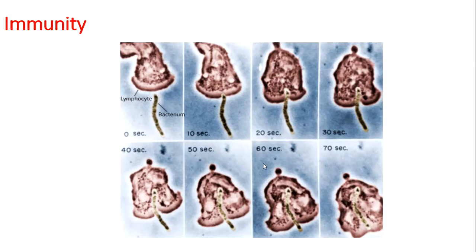Immune cells include lymphocytes and other white blood cells. These cells detect viruses, bacteria, and other foreign substances that are not normally made in the body, then attack and destroy them. If the body is exposed to the same bacteria, virus, or substance later, some immune cells remember it and make proteins called antibodies. Antibodies recognize specific proteins on harmful agents and help the body fight infection faster. Because there are many different types of bacteria and viruses, humans make billions of different types of antibodies, each responding to a different harmful agent.